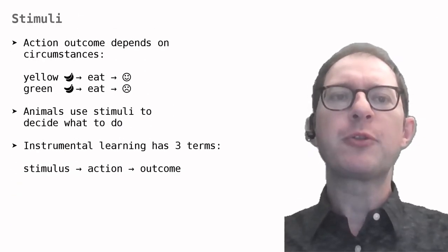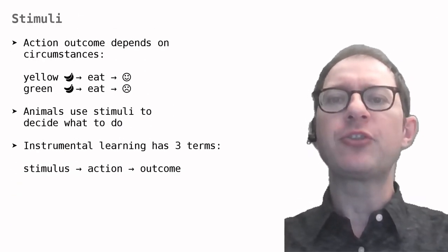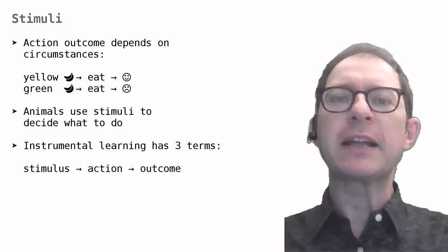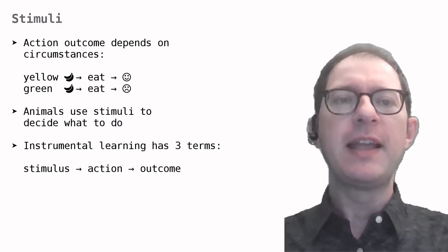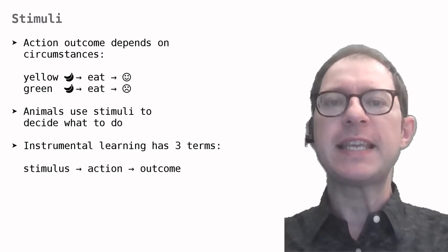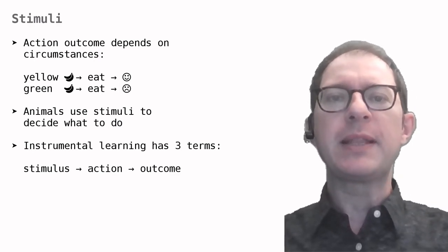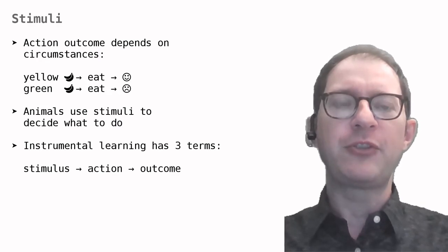Let's say something about the role of stimuli in instrumental conditioning now. In Pavlovian conditioning, we know that animals learn to react to the conditioned stimulus, the CS, with a response, the CR, and that this depends on the CS having been paired with the unconditioned stimulus, the US.